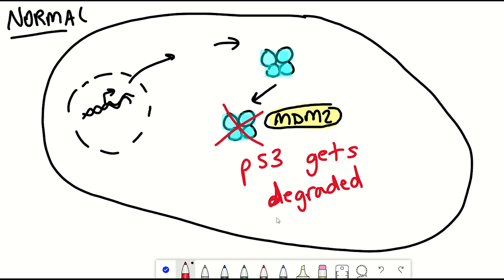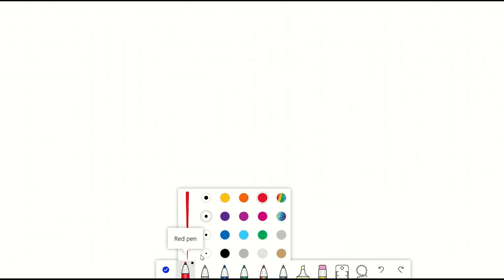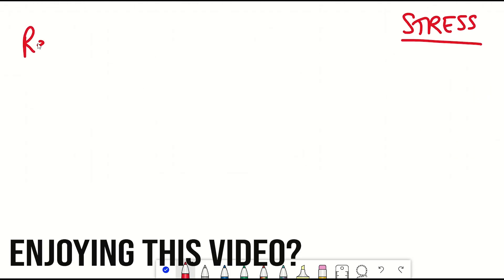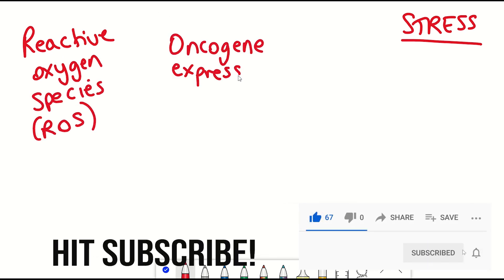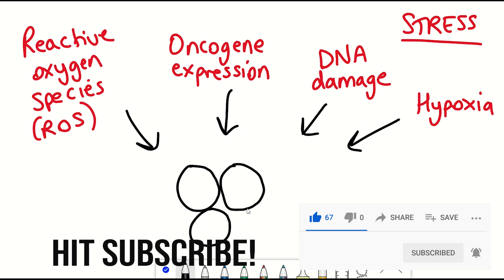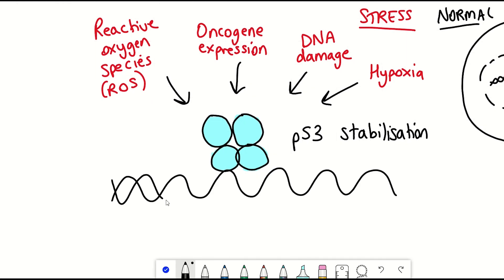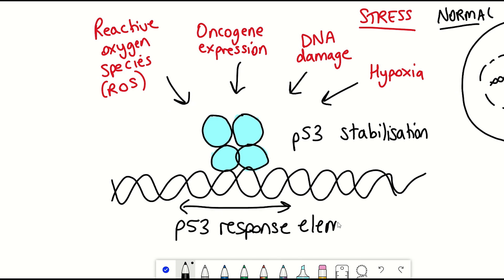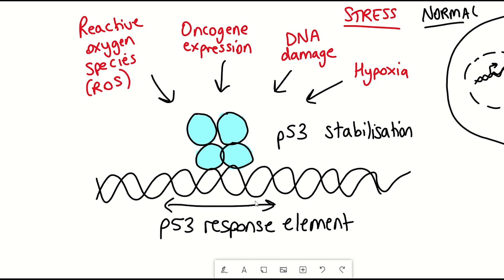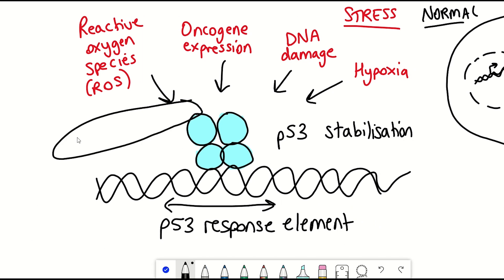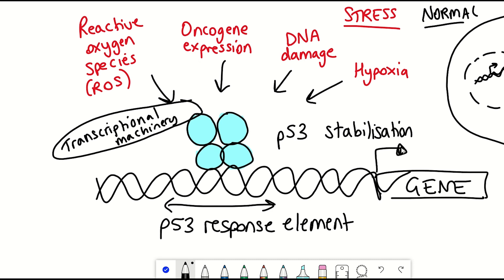And so in normal unstressed conditions, the levels of p53 are quite low in a cell. However, when there's stress — whether it's reactive oxygen species, expression of an oncogene, DNA damage, or extreme hypoxic conditions — these all cause stabilisation of p53. And so when p53 is stabilised, it can activate these different genes. p53 does this by binding to its so-called p53 response element, which is just a consensus sequence on DNA that the DNA binding domain of p53 recognises and can bind to, and then it brings in the transcriptional machinery to upregulate these different genes.